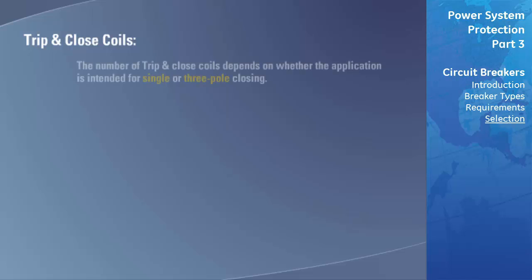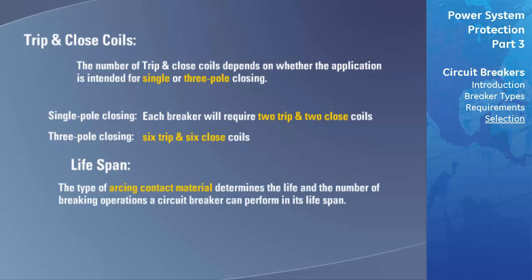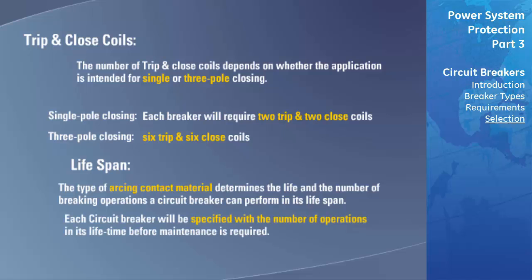The number of trip and close coils depends on whether the application is intended for single or three-pole closing. For single-pole closing, as typically used in transmission line applications, each breaker requires two trip and two close coils per phase — one each for standard operation and one each for redundancy — resulting in six trip and six close coils for a three-phase line. The type of arcing contact material determines the life and number of breaking operations a circuit breaker can perform before it should be taken in for maintenance.